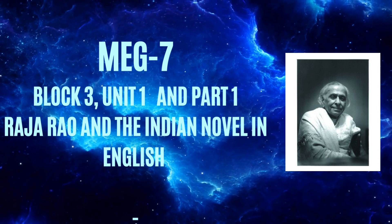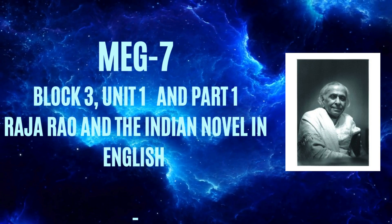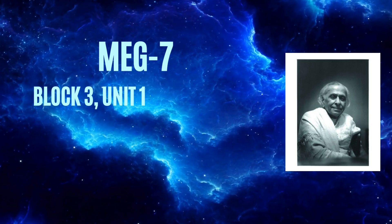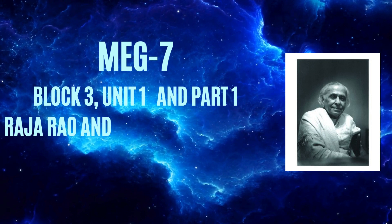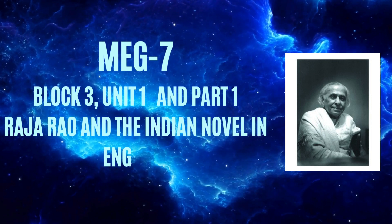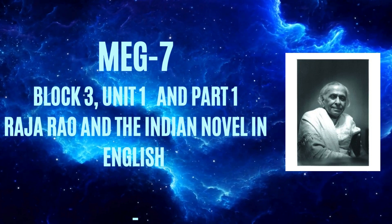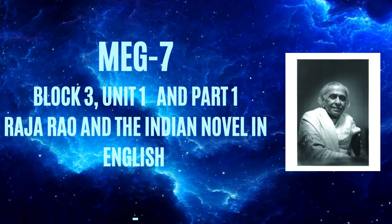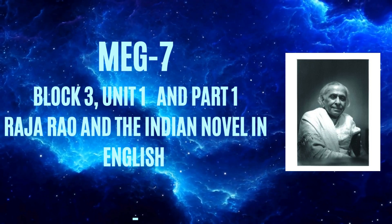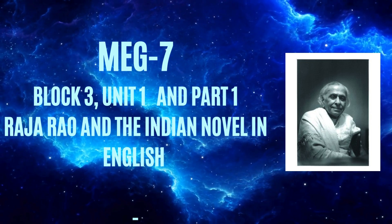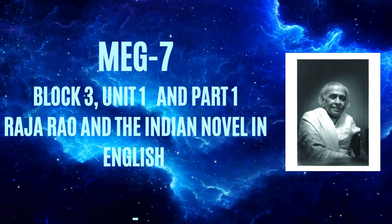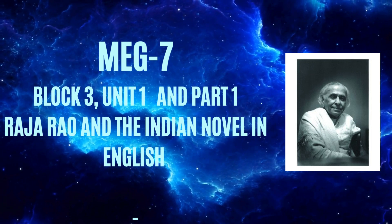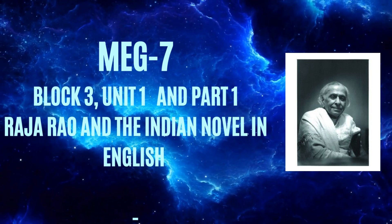Mulk Raj Anand in his novels like Untouchable and Coolie gives evidence of a total commitment to the socialist doctrine. Anand also presents a cross-section of Indian society through the national struggle for freedom, which is not only a political event but also a comprehensive emotional experience for the people involved in it. There is a shift of emphasis in post-independence Indian literature in English. The novelists writing after 1947 show a sense of disenchantment with the actual reality of freedom, and their anger finds expression through a sense of humanistic compassion for the suffering Indian masses.